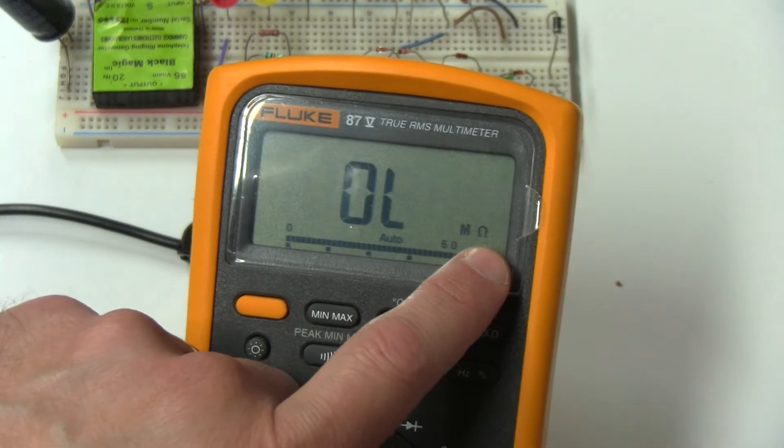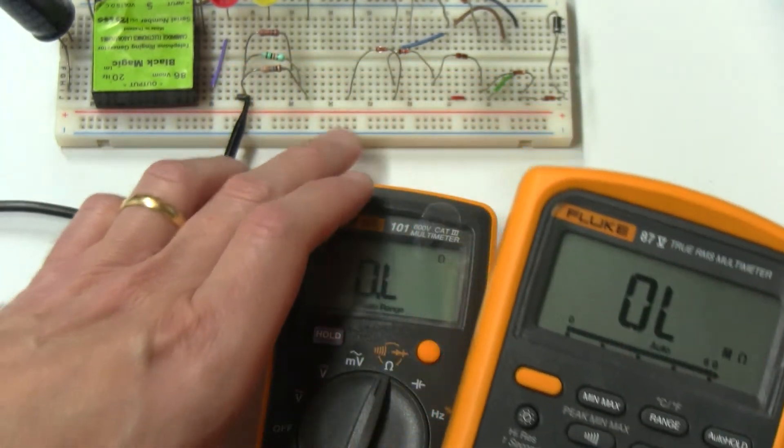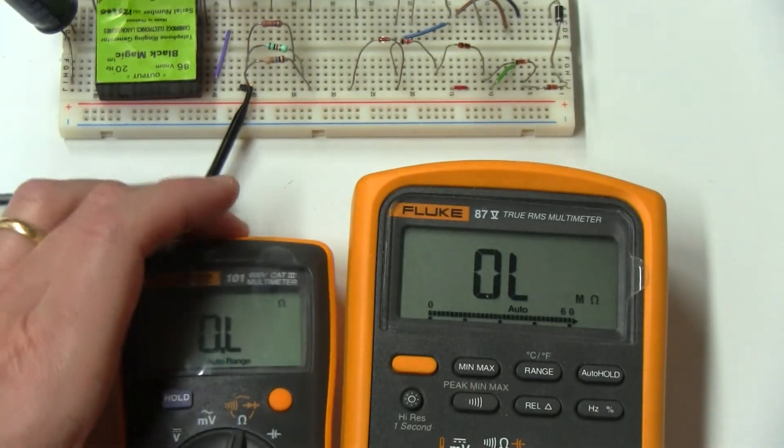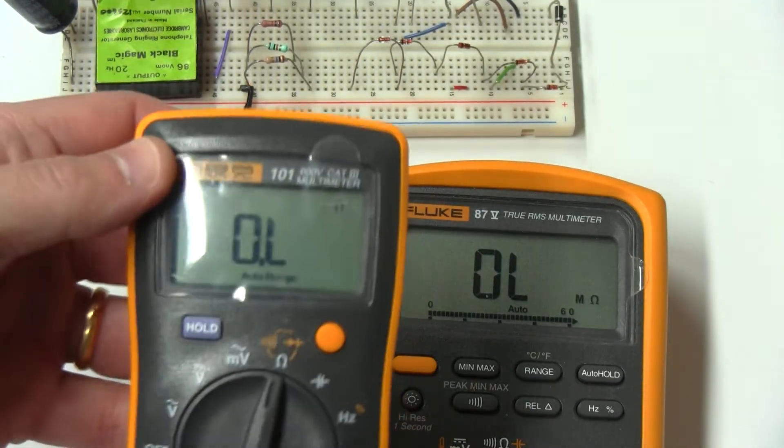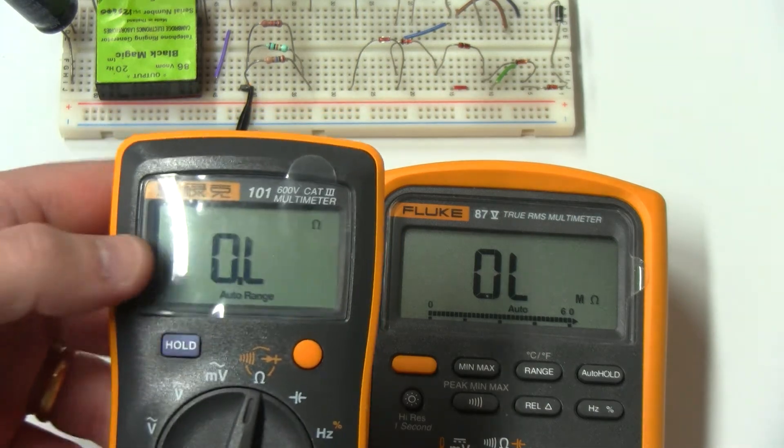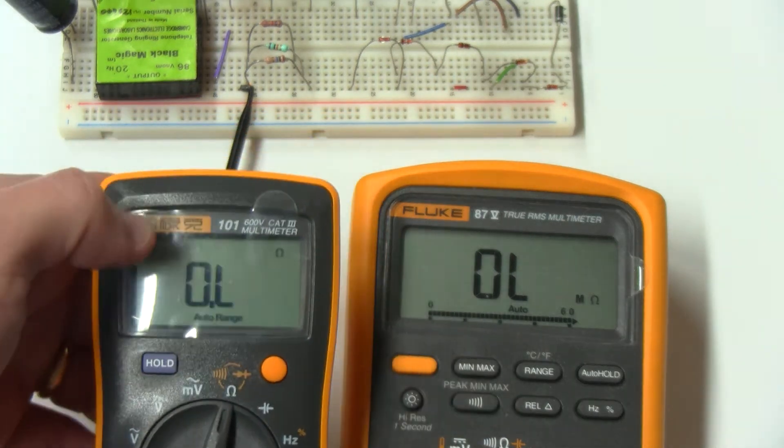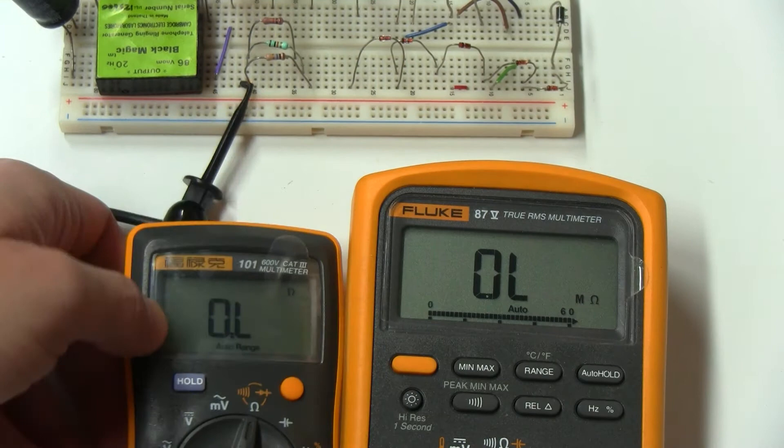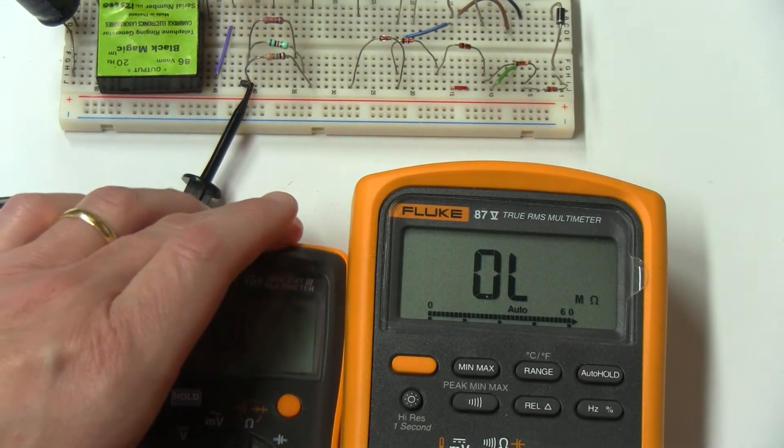Depending on how I measure, this letter changed from M to K to just plain ohms. This meter does not have the M or K as I showed in the previous video.